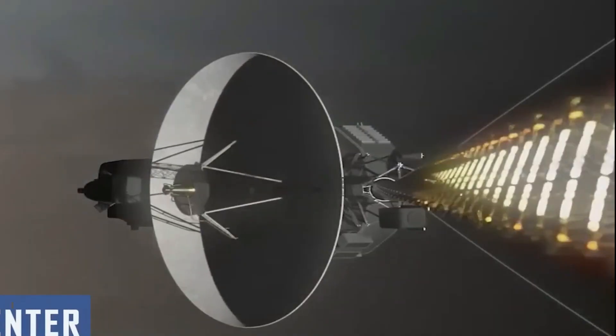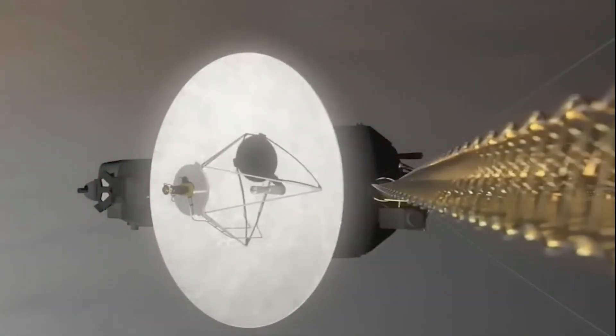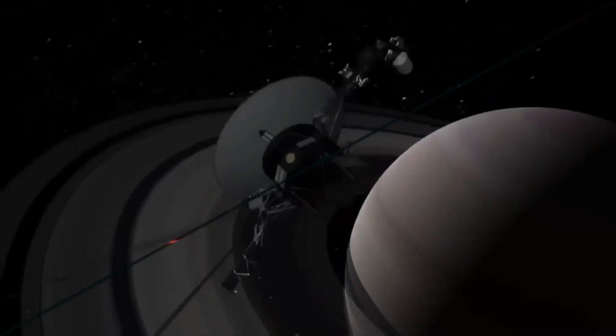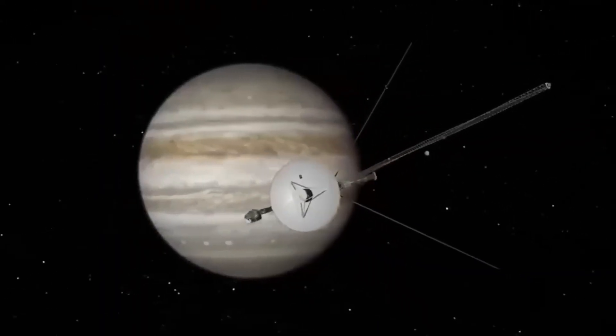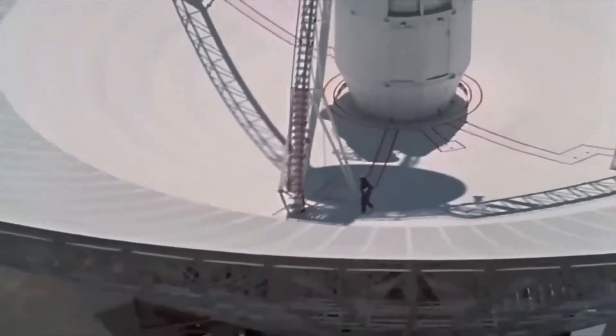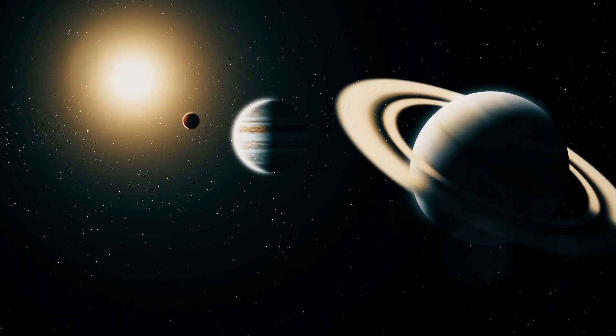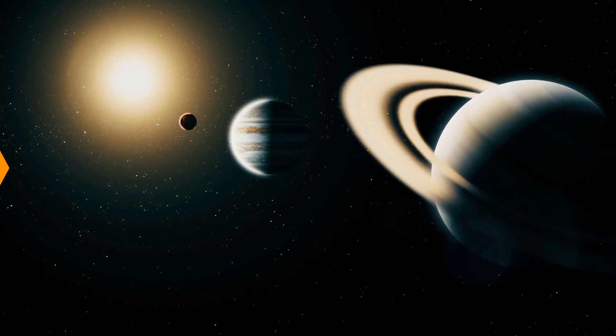Since then, Voyager 1 has been one of NASA's most valuable tools for finding new and exciting things in space. A year later, the spacecraft spent more than 100 hours taking almost 4,000 pictures of Jupiter. This gave us the first ever time lapse of the gas giant's rotation. After that, it was the first spacecraft to find Jupiter's ring and two new moons.